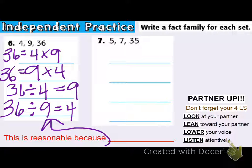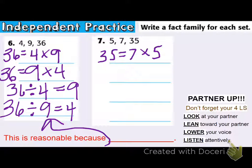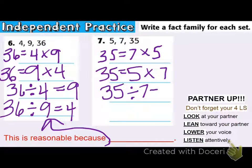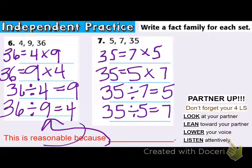In problem number seven, we have 35. What are some ways to get 35? I know that seven times five is equal to 35, and you can also write it as five times seven, which will give you 35. For the fact family, we know that multiplication and division are connected. How can I make 35 by dividing? Well, 35 divided by seven is five. And 35 divided into five groups would put seven in each group. It's reasonable because multiplication and division are connected.